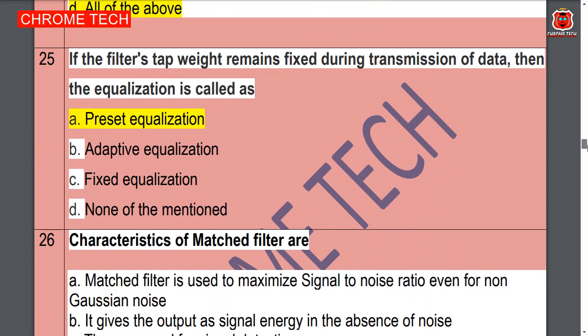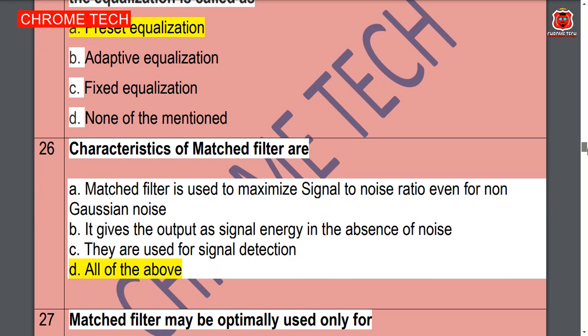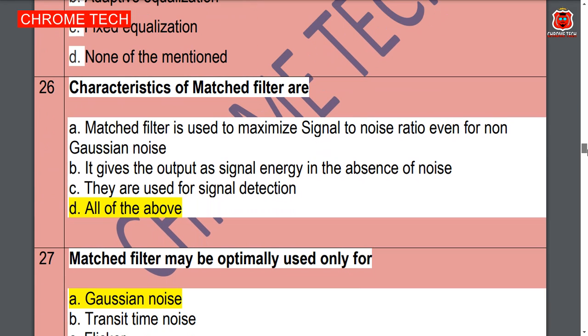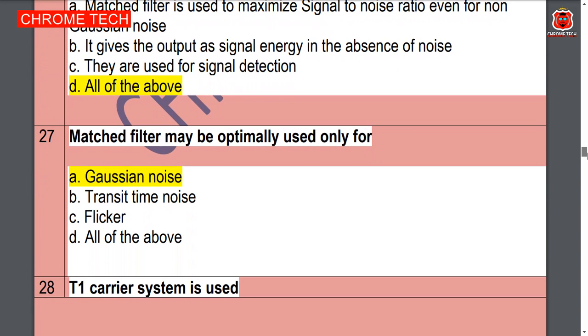If the filter tap weights remain fixed during transmission of data then the equalizer is called — option A, preset equalization, is the correct answer. Characteristics of matched filter — all of the above, option D is the correct answer.